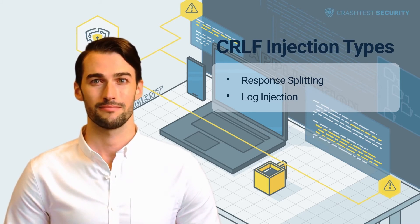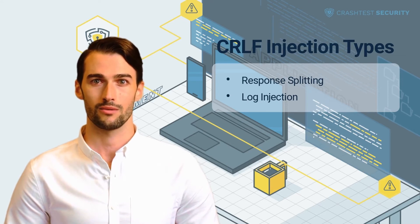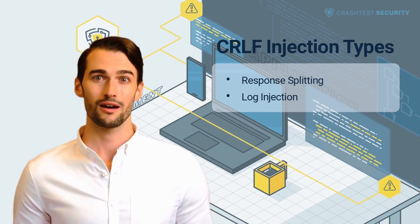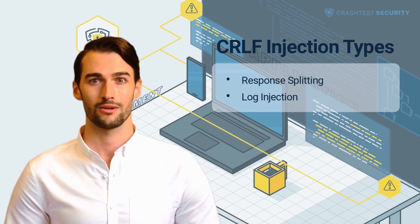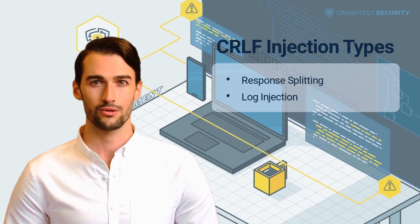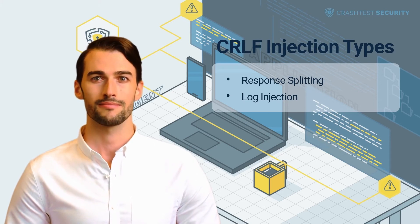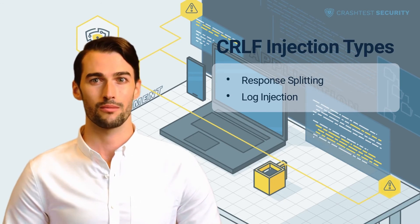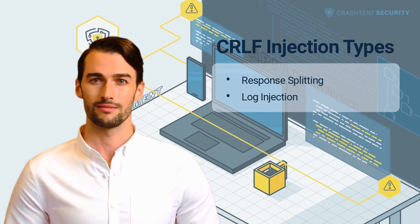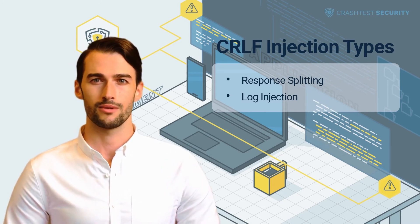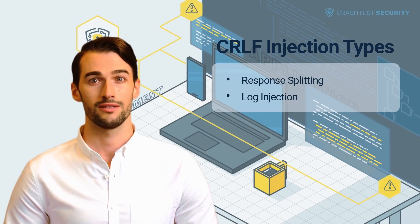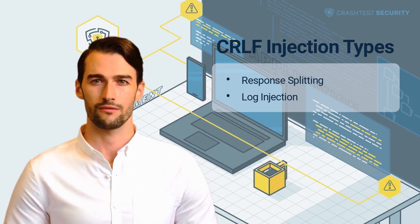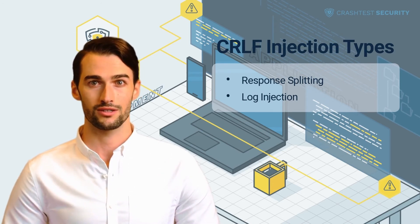Log injections are also known as log poisoning or log splitting. This attack entails inserting untrusted or unvalidated data into a log file, which can be anything from a system log to a user or access log. There are several types of log injection attacks. One is to corrupt a log and make it unusable, or to forge and change its data, creating fake log entries. Log forging can be used to cover traces of an attack, draw attention to another party and create confusion, and divert attention from other possible attacks being launched simultaneously.